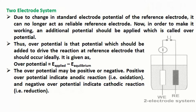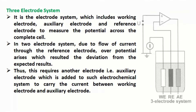This change in potential breaks down the electrochemical system and no result is obtained. Thus, two-electrode system cannot be used for exact measurement of potential, so another electrode called auxiliary electrode or counter-electrode needs to be introduced.